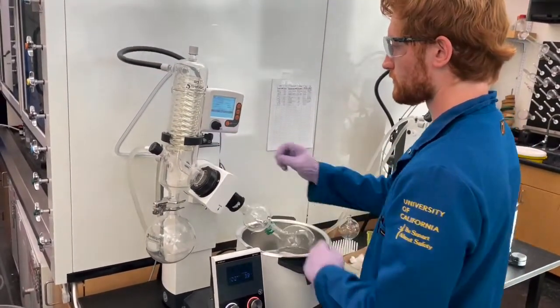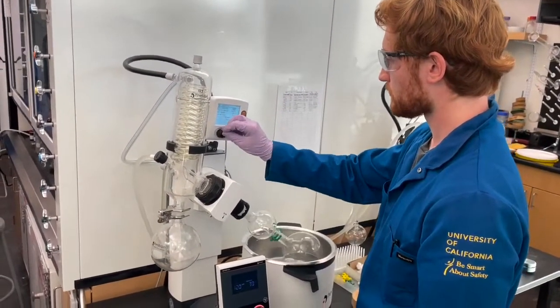The test tubes containing the amide product are combined and evaporated using this Rotovap instrument, which efficiently removes the solvent used in the column.